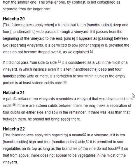Halakha 21. A path between two vineyards resembles a vineyard that was devastated in its midst. If there are sixteen cubits between them, he may make a separation of four cubits on either side and sow in the remainder. If there was less than that between them, he should not bring seeds there.